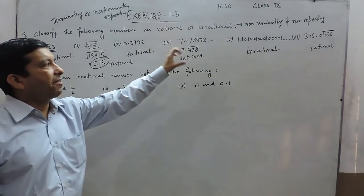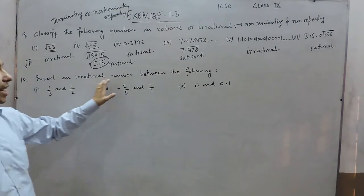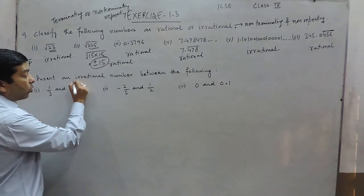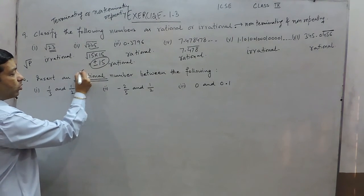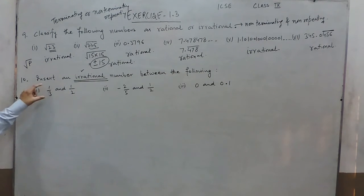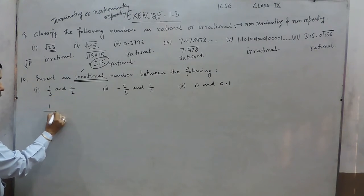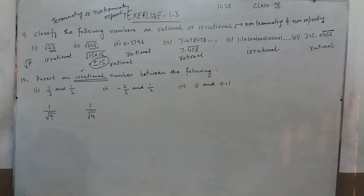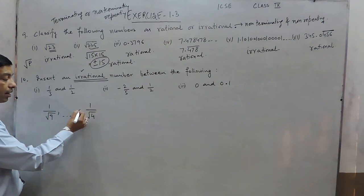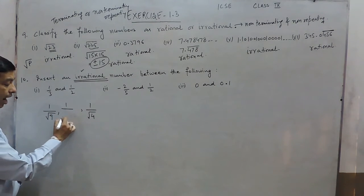So this way we can define rational and irrational numbers. In question number 10, insert an irrational number between the following. We have to be very clear about what we are inserting. Here, when we have to insert an irrational number between 1 upon 3 and 1 upon 2, this can be written as 1 upon under root of 9 and 1 upon under root of 4. So all numbers between them with a denominator as under root are irrational numbers.